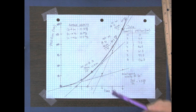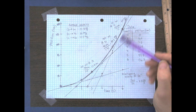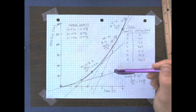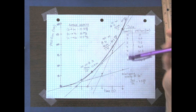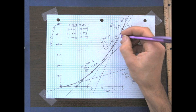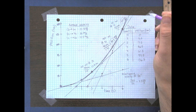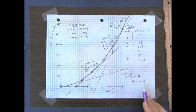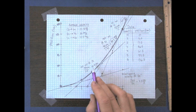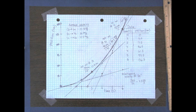I went ahead and drew two more tangent lines and found the rise over run for those slopes. I got 39.2 cm per second and 55 cm per second. So to summarize: instantaneous velocity at one second was 7.5 cm/s, at two it was 22.8, at five it was 39.2, and at six it was 55 cm per second.